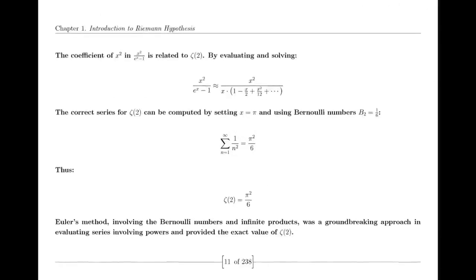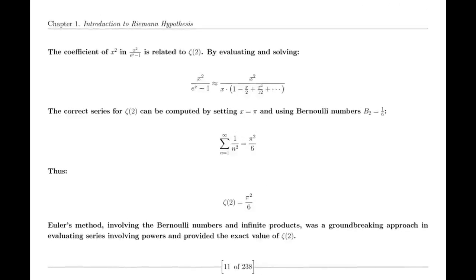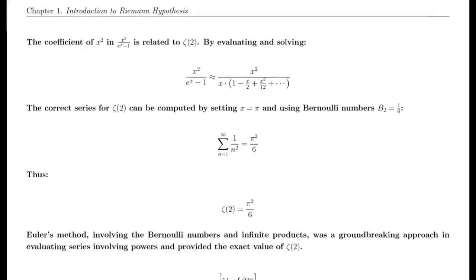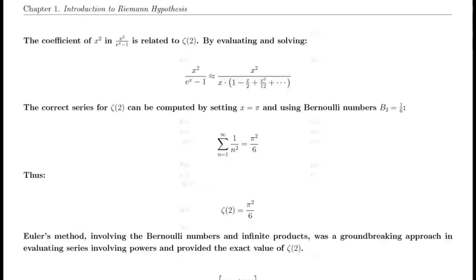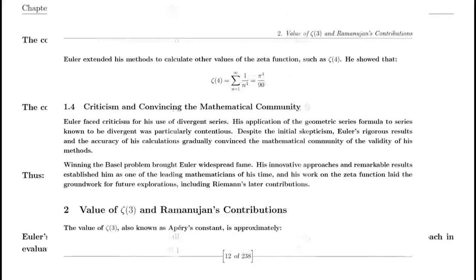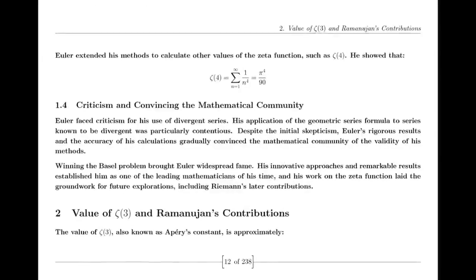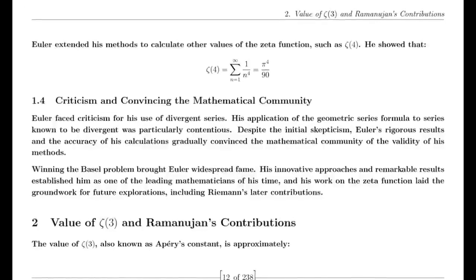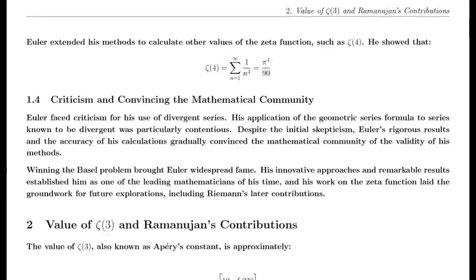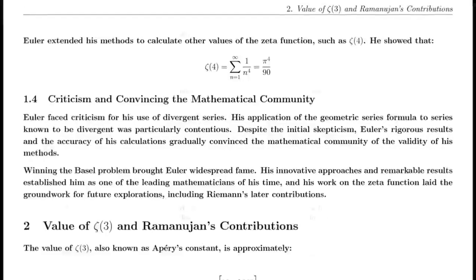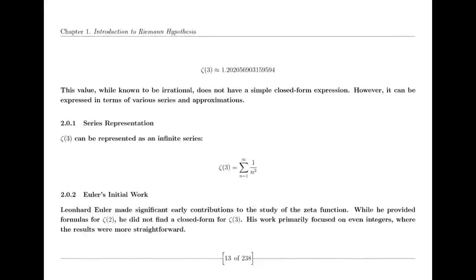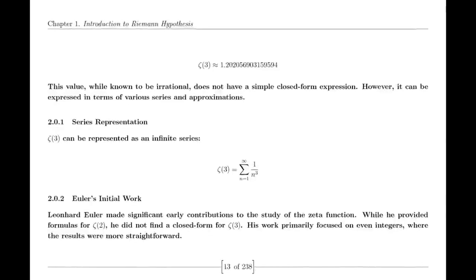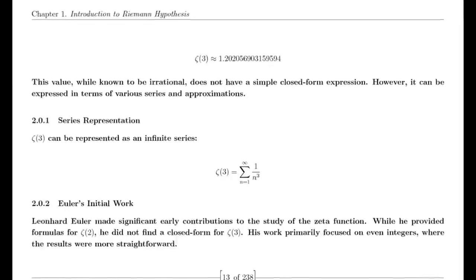In 1859, Riemann published his seminal paper on the distribution of prime numbers, which introduced the zeta function and laid the groundwork for modern analytic number theory. This paper was a milestone in mathematical history and has had a lasting impact on the field, influencing subsequent research and discoveries.